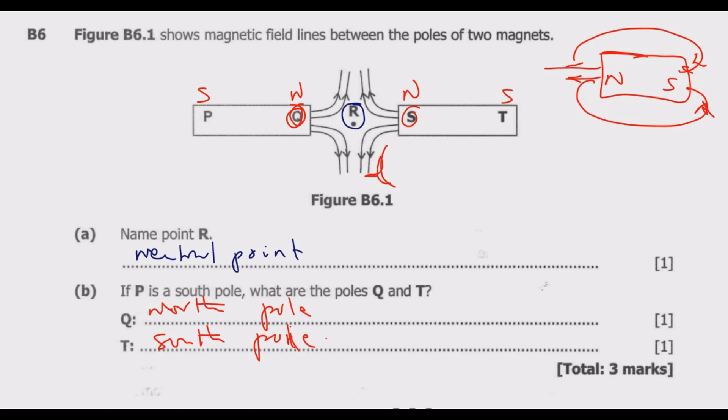Take note of the direction of magnetic field. Magnetic field always moves from north to south. This is very important. If the arrows are pointing inside it means this should be south. Here they should be coming out. That's the key for you to know. This is how you answer this question quickly to get the three marks.